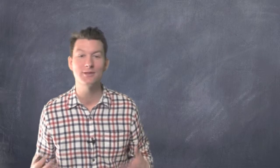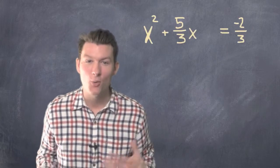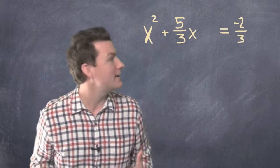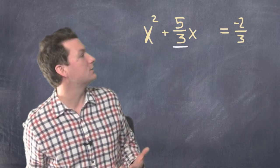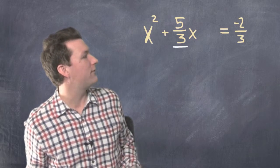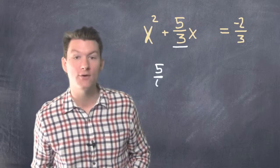Let's try to do this with the more difficult equation. So, what number is next to x? It's 5 over 3. So what's half of that? Half of 5 over 3 would be 5 over 6,